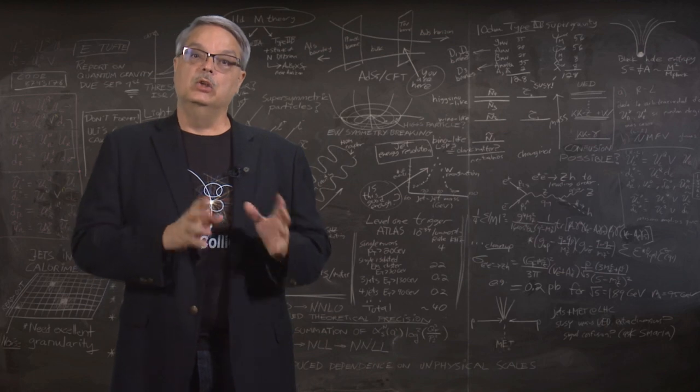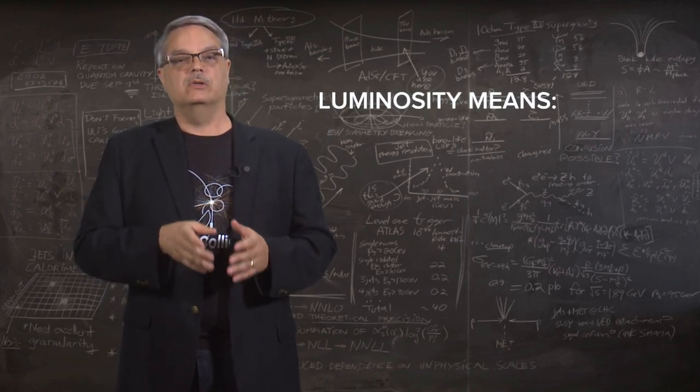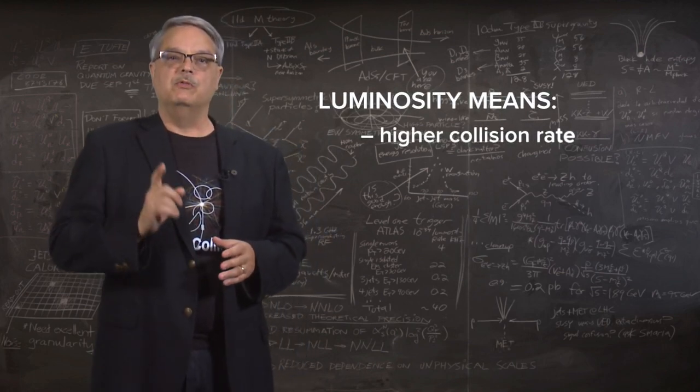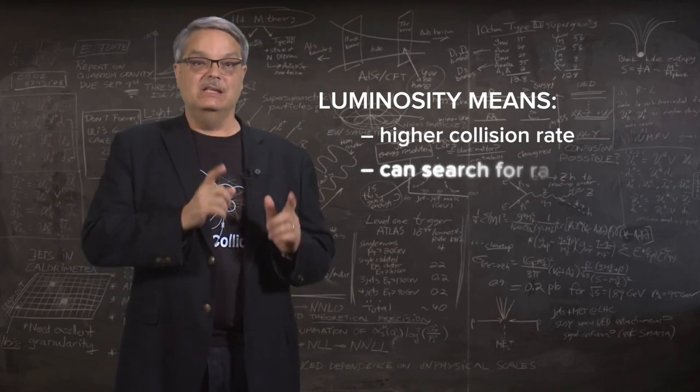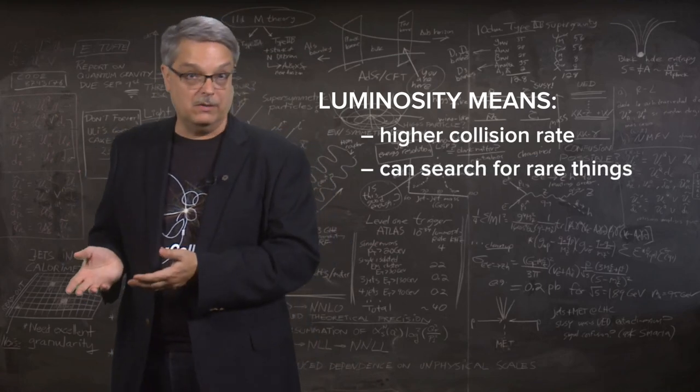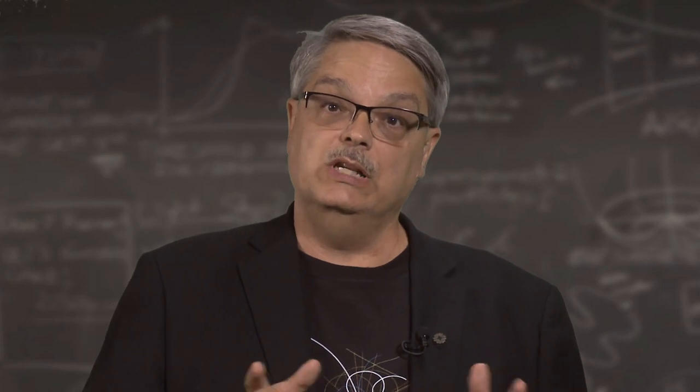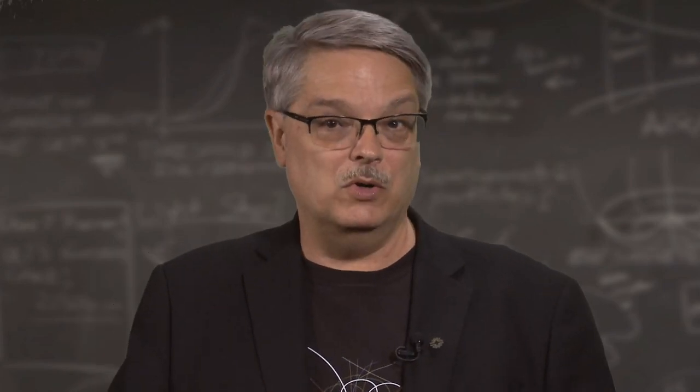In contrast, luminosity is related to the number of particles undergoing collisions. The reason that's important is that more collisions means a better chance of seeing something rare. So if energy and luminosity are important parameters, how would a fixed target and collider mode come into play?